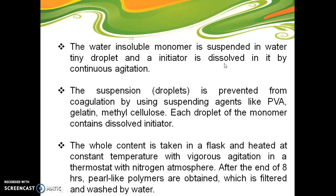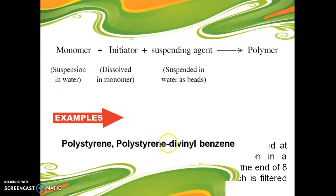The suspension is prevented from coagulation by using suspending agents like PVA, gelatin, methyl cellulose, etc. Each droplet of monomer contains dissolved initiator. The whole content is taken in a flask and heated at a constant temperature with vigorous agitation in a thermostat under nitrogen atmosphere. At the end of eight hours, pearl-like polymers are obtained, which are filtered and washed with water.